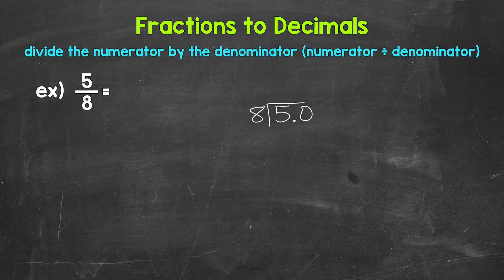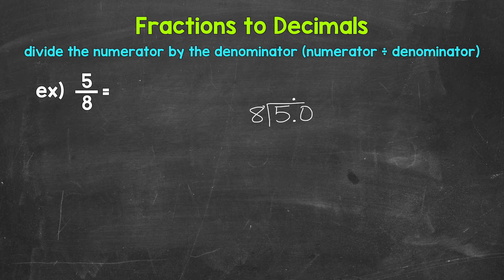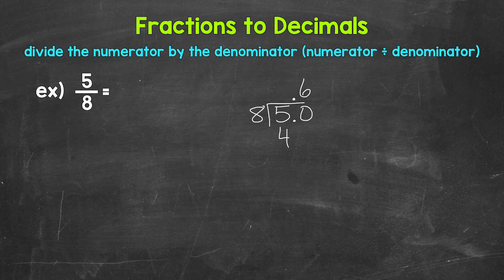Once we have that decimal and the zero, we can bring the decimal straight up into where the quotient, the answer, will be. And now we can think of this as 50 divided by 8. So how many whole groups of 8 in 50? Well, 6 — that gets us to 48. We put that 6 above the zero. Multiply: 6 times 8 is 48. Subtract: 50 minus 48 is 2.